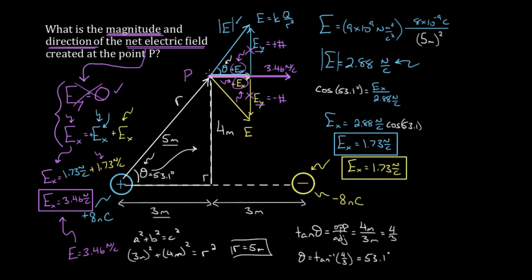So to recap: when you have a 2D electric field problem, draw the field created by each charge, break those fields up into their individual components. If there's any symmetry involved, figure out which component cancels. Then to find the net electric field, use the component that doesn't cancel and determine the contribution from each charge in that direction. Add or subtract them accordingly based on whether those components point to the right or to the left, and that gives you your net electric field at that point created by both charges.